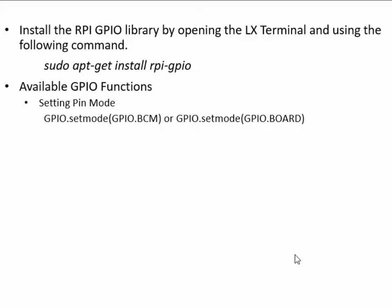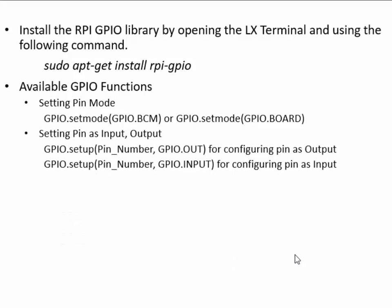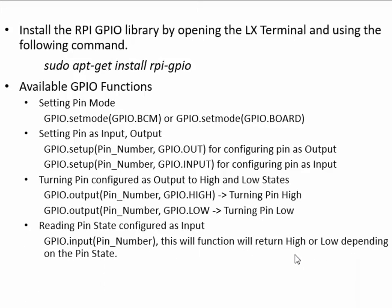To set the pin mode, use the command GPIO.setmode(). I prefer using GPIO.BOARD for future compatibility. Use the GPIO.setup() command along with the pin number to set that pin as input or output. Use the GPIO.output() command along with the pin number to change the state of the pin, and GPIO.input() to read the state of the pin.